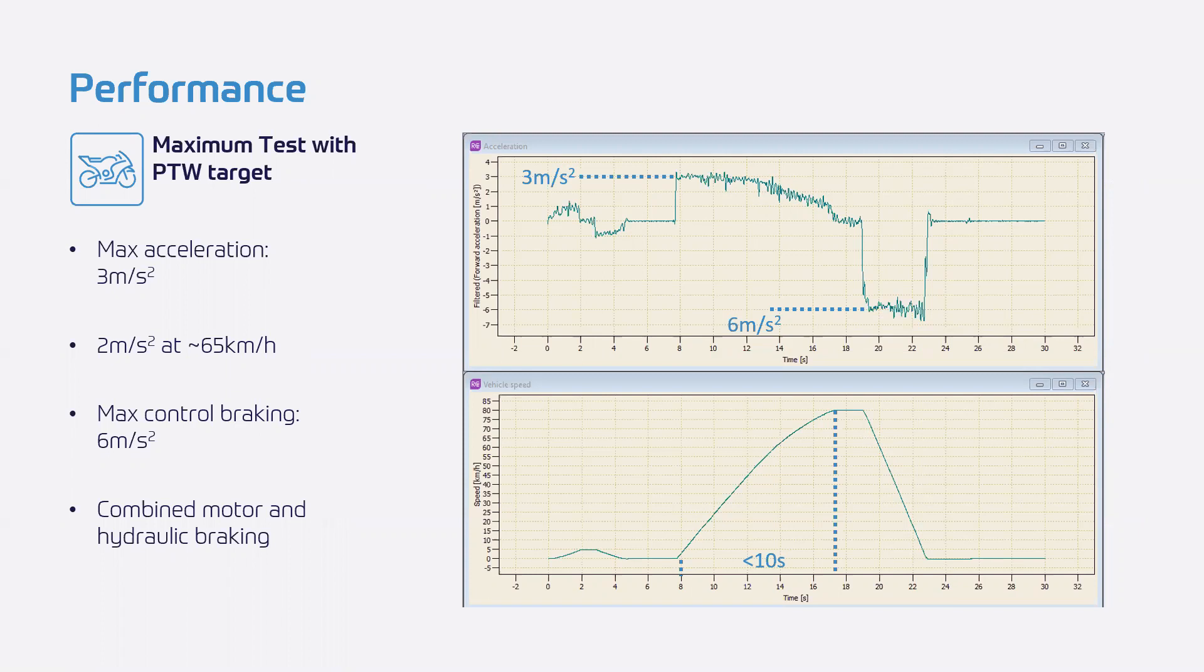So, what you engineers love, though, is when we push it to the maximum. And so, if we unleash the performance, what can we do? Well, we can do a maximum acceleration of 3 meters per second squared. And we even maintain 2 meters per second squared all the way up to 65 kilometers per hour. And ultimately, what this means is that we can achieve 0 to 80 kph with maximum acceleration in less than 10 seconds over a distance of approximately 130 meters. Then, during braking from 80 kph, we can do a maximum and very controlled 6 meters per second squared. And this combines the motor and hydraulic braking for best efficiency and control.